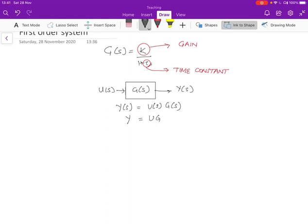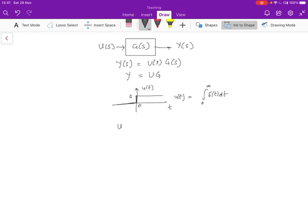Here we are going to look at the output when the input is this function called the step function. So it's 0 before time 0, and then at time 0, it goes to 1, and it stays at 1 forever. It's sort of the system is given a sudden input of 1 at time 0, and then it just continues to be there. We recognize this is just the integral of the delta function. This is what's called the step input u(t). U(s), which is the Laplace transform, is given by 1 over s.